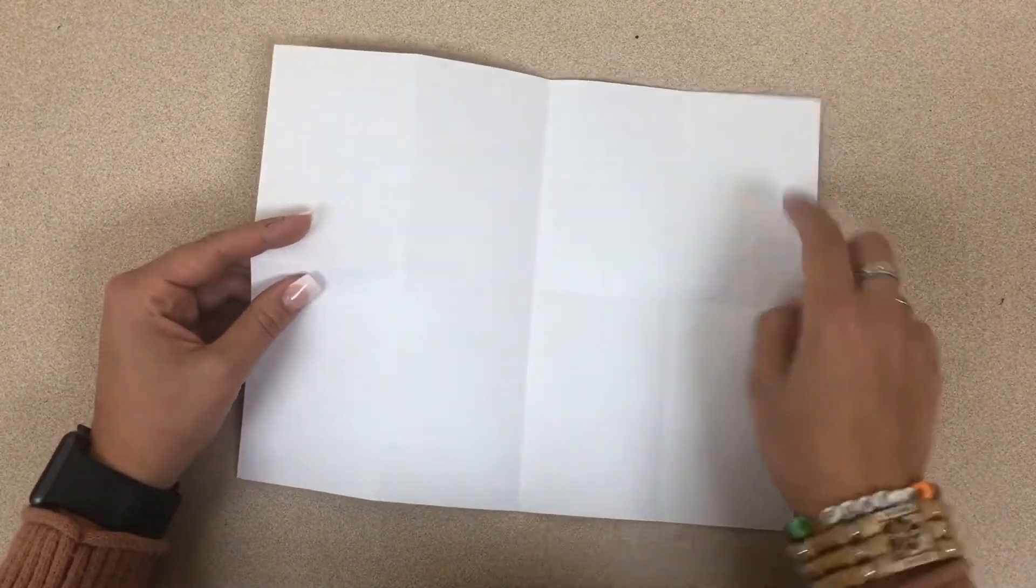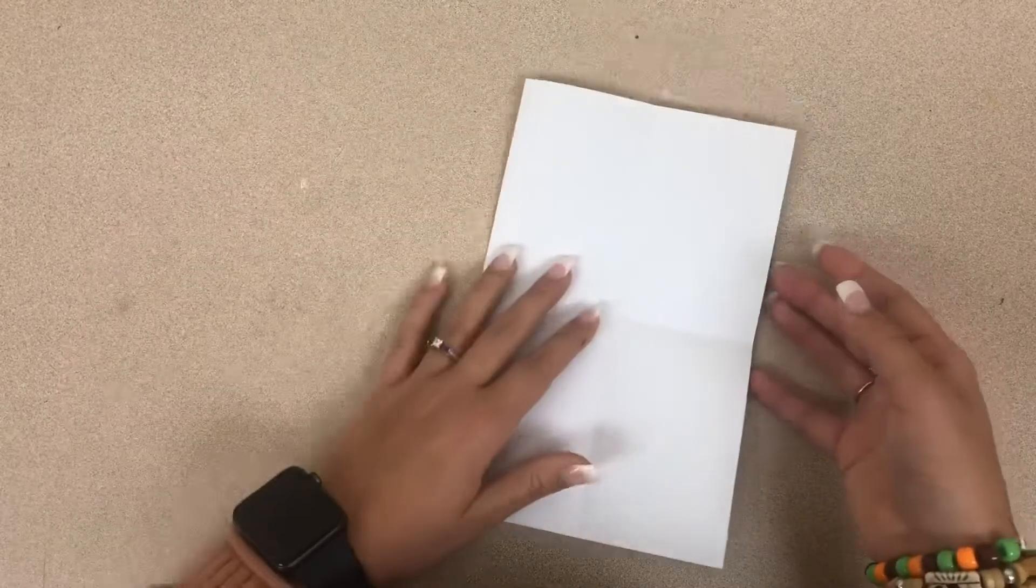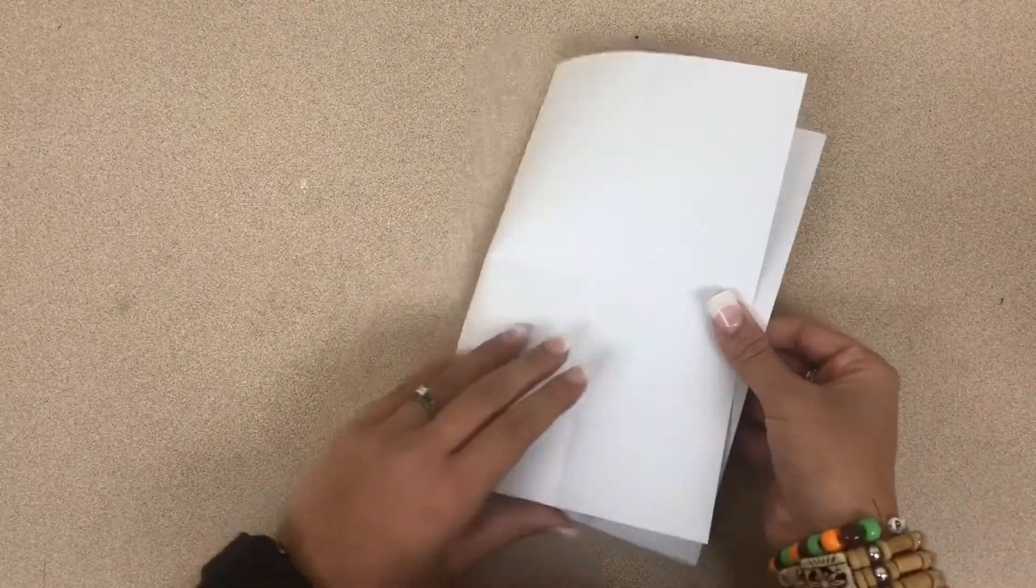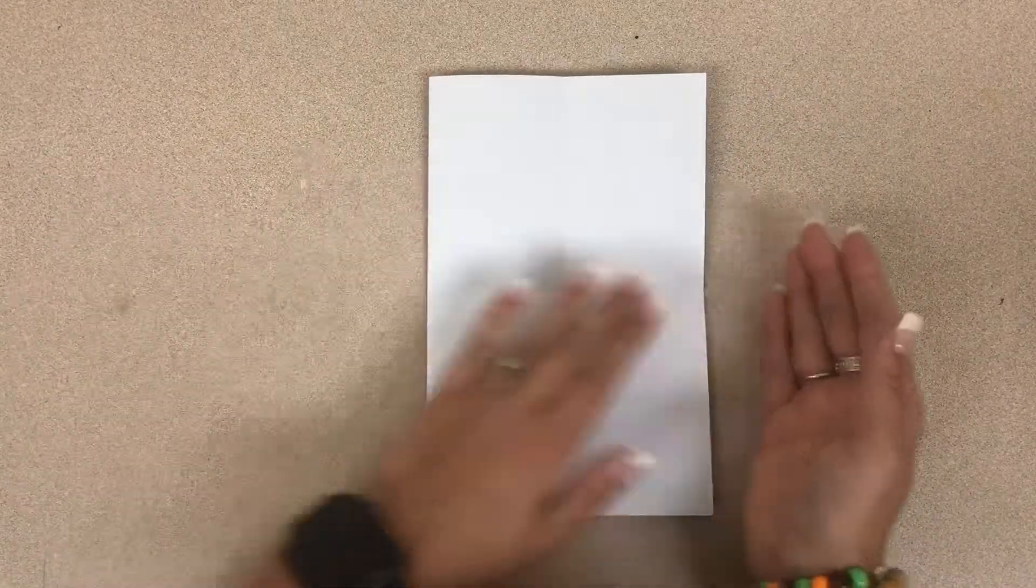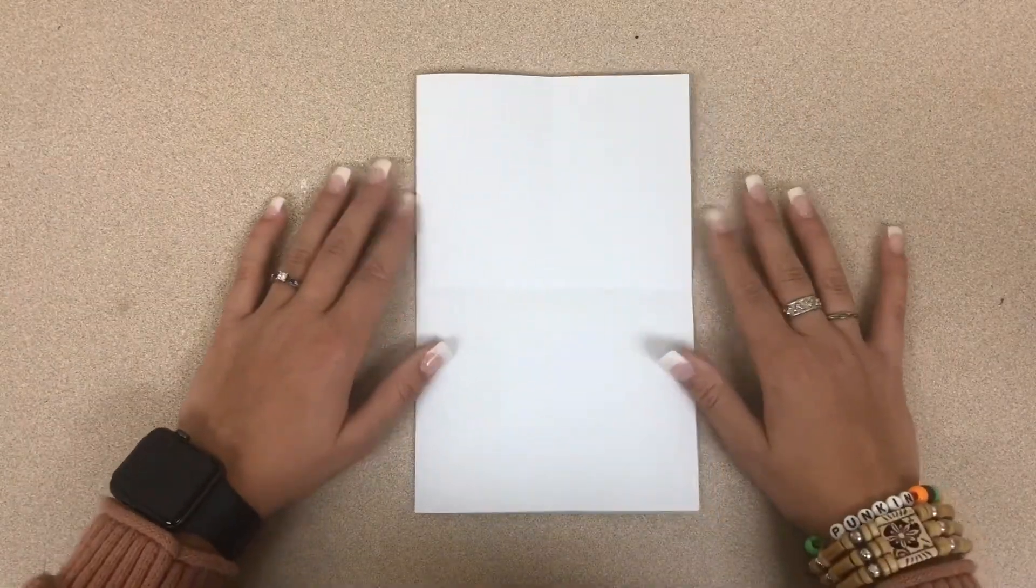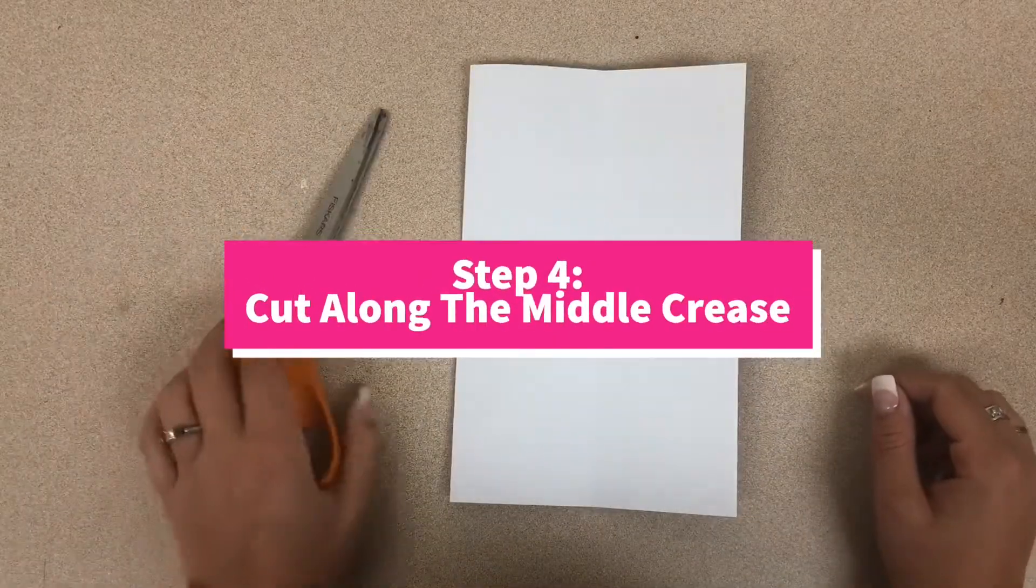Now we need to open our book so that we can only see four different sections, so that our paper is folded hamburger style. Here is where our scissors come in, so we need to cut along this middle crease.